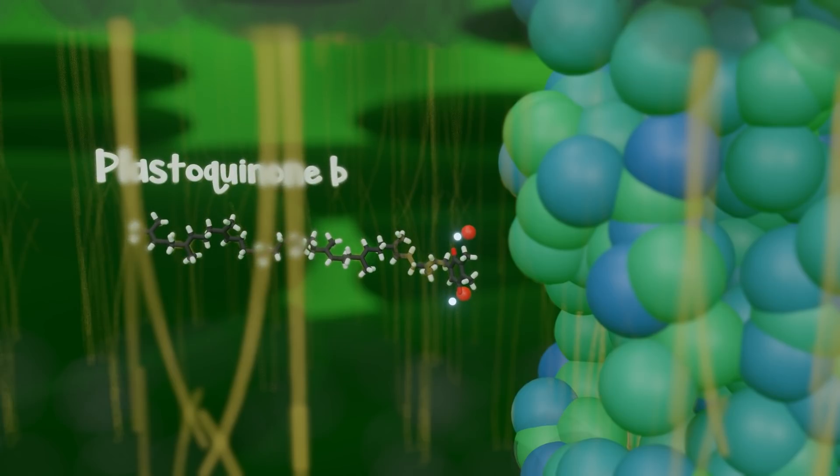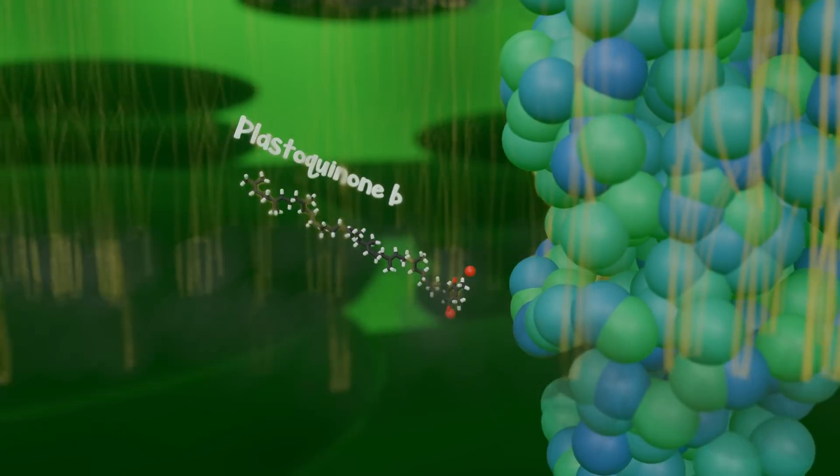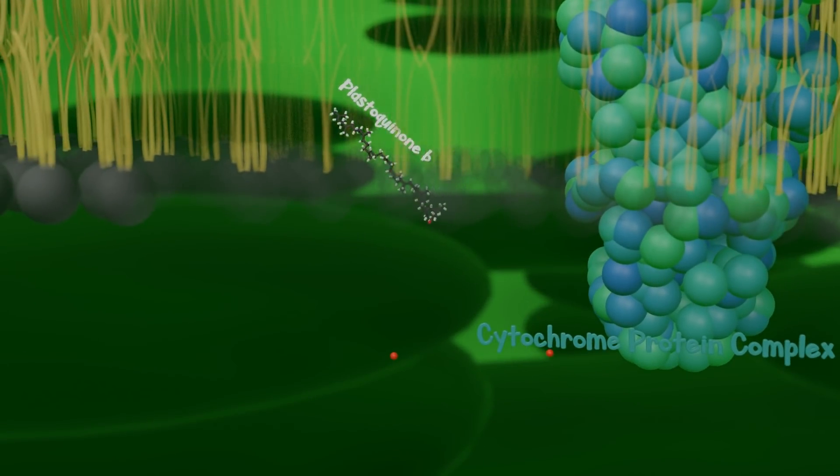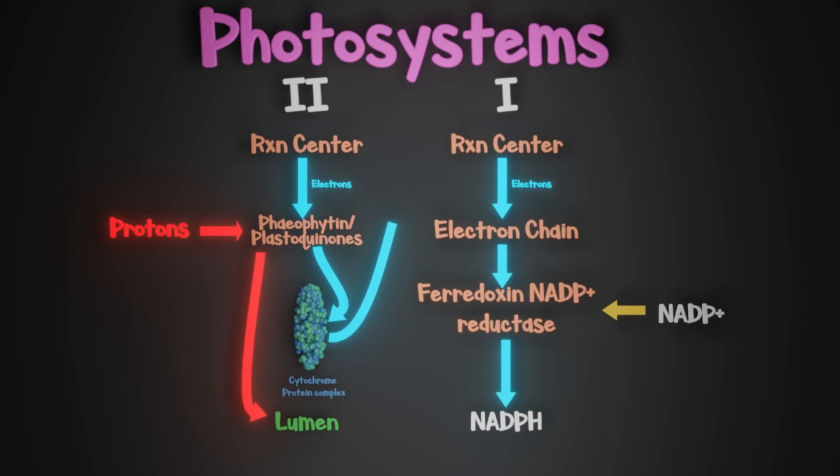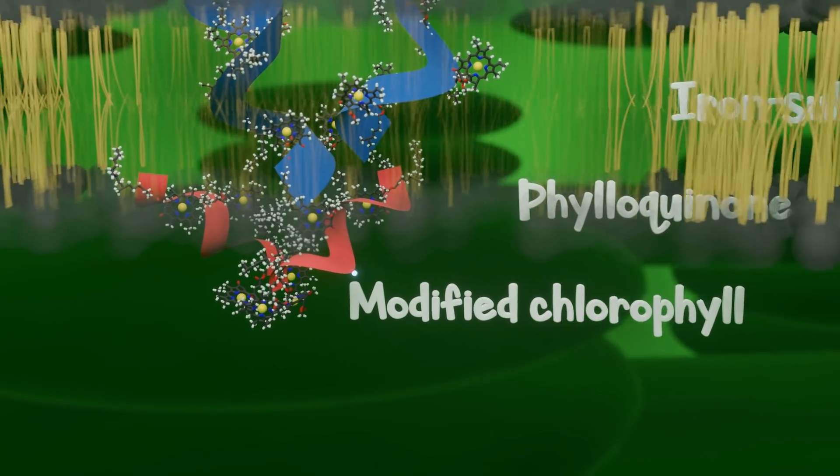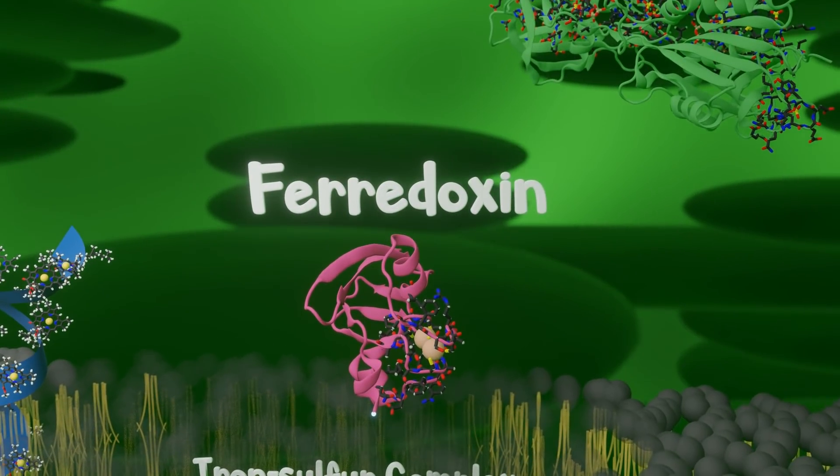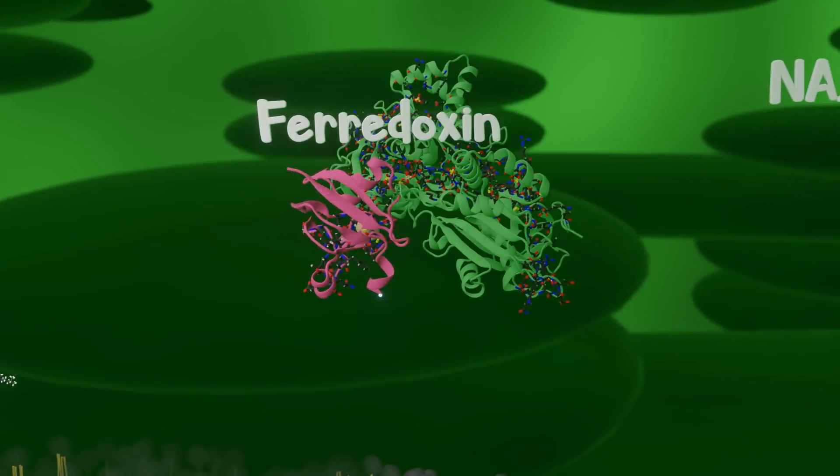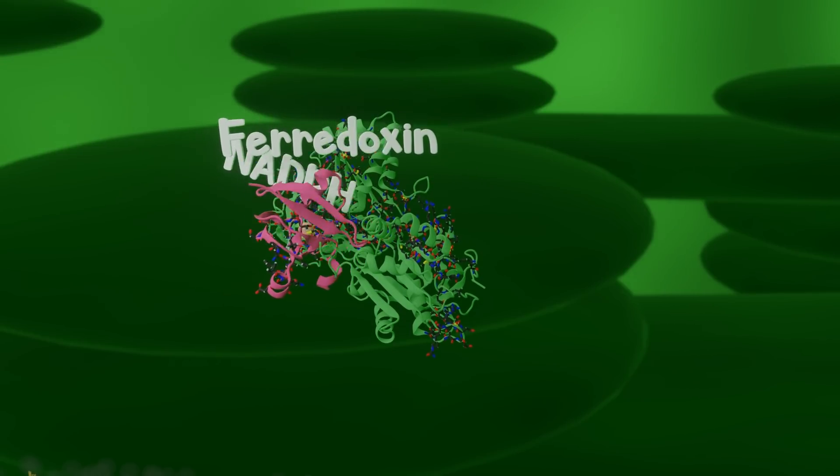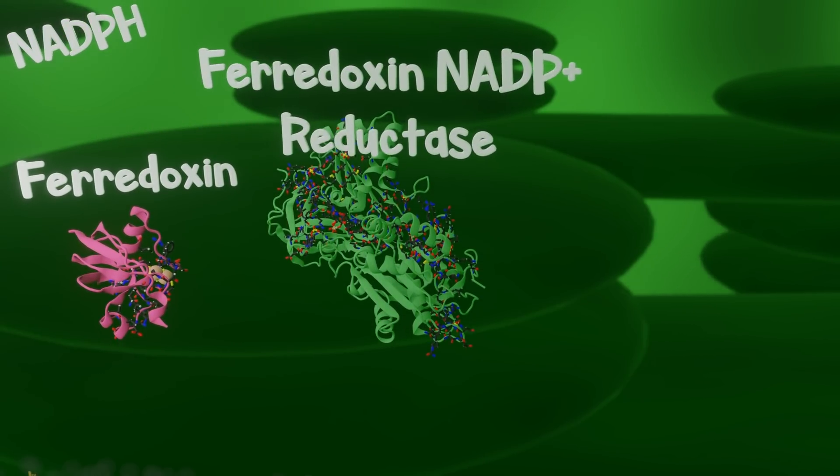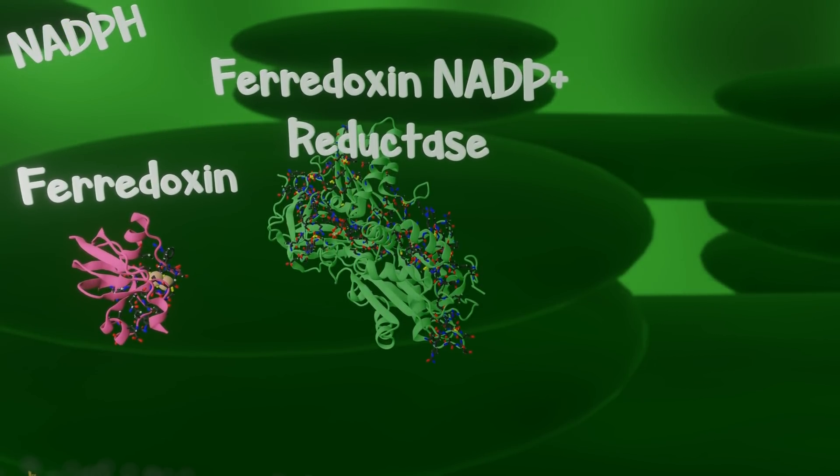Remember the cytochrome protein complex that freed up the electrons from plastiquinone B? Well, those electrons need to go somewhere, and that just so happens to be the reaction center of photosystem I. Now the electrons from photosystem I get passed down a chain to wind up with ferrodoxin, which is then used to reduce NADP-positive in a large protein complex aptly named ferrodoxin NADP-positive reductase.